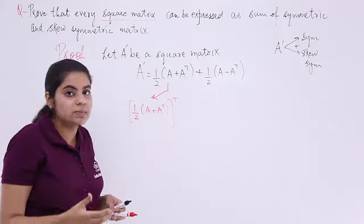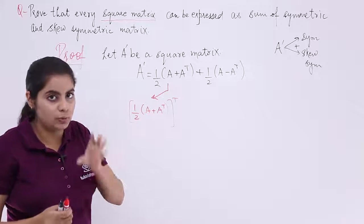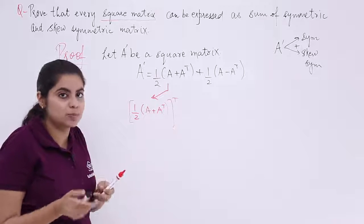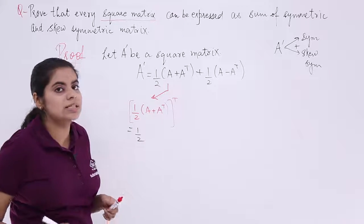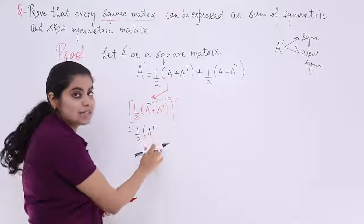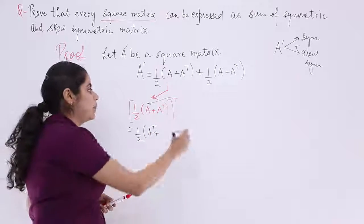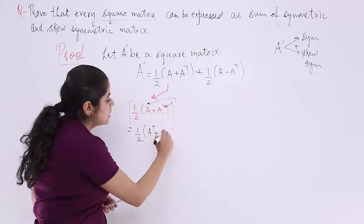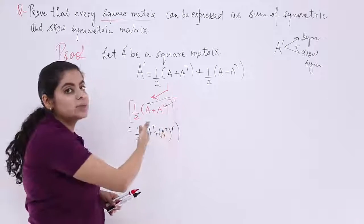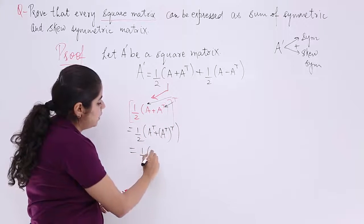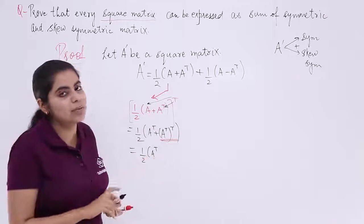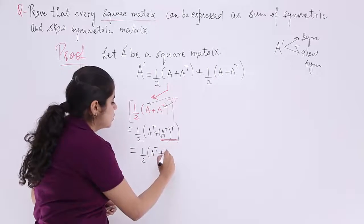Why are we taking the transpose? Because we know that a matrix is symmetric if Aᵀ = A, and skew symmetric if Aᵀ = −A. So to check, we take the transpose. The half comes out since it is a constant. Then the transpose goes inside: A becomes Aᵀ, and (Aᵀ)ᵀ = A. So we get half into (Aᵀ + A).